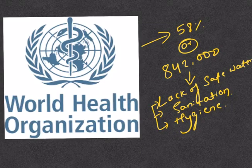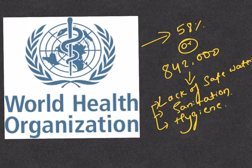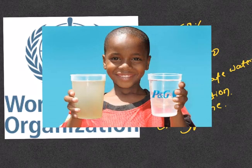The World Health Organization estimates that 58% of disease burden, or 842,000 deaths per year, is attributable to a lack of safe drinking water supply, sanitation, and hygiene. The supply of safe drinking water is therefore essential for a healthy life.